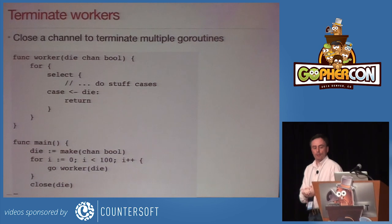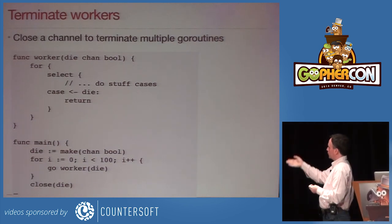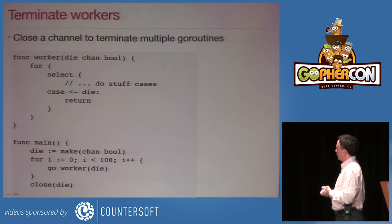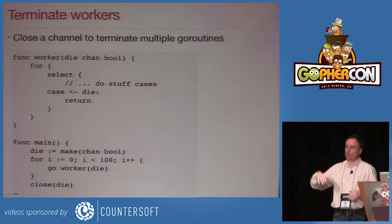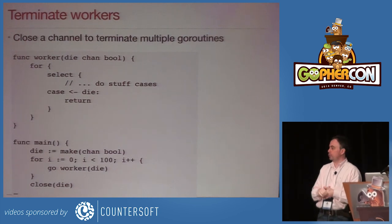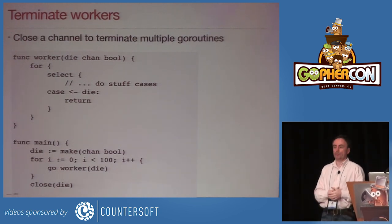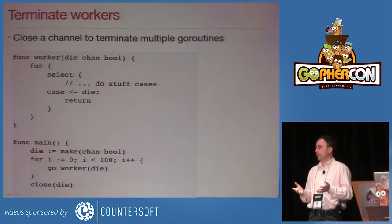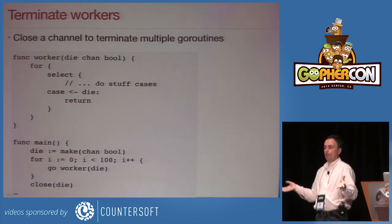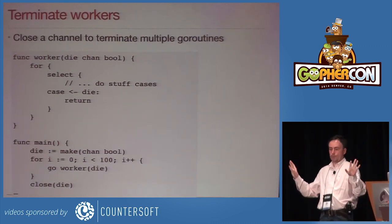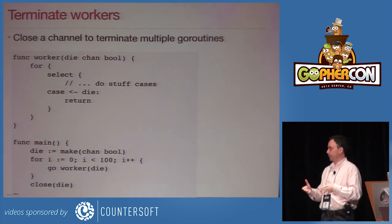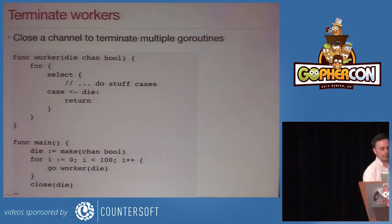One thing you can do with a select is have some goroutines — here I've got a hundred — and tell them all to die at some point by having a select statement which is doing something but is also willing to receive a message on a die channel. Rather than sending a message to hundreds of things, I just close that channel. At that point, all the goroutines disappear. Again, really beautiful — two lines of code to express something that would have been horribly complicated in other languages.